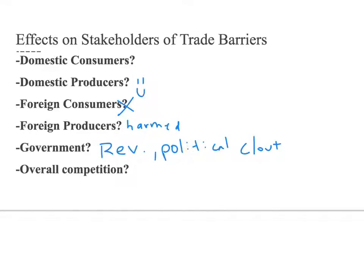Domestic producers are much happier because they can sell more products and be more competitive. Domestic consumers are less happy because they pay higher prices and have less quantity and competition to choose from. Consumer and producer surpluses change accordingly — consumer surplus is the area below the demand curve and above the price consumers pay, up to the quantity consumed. Producer surplus is the area above the domestic supply curve and below the price received at the domestic supply quantity.